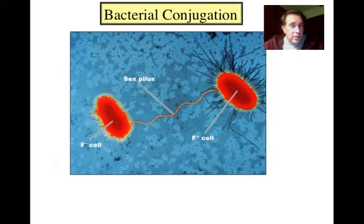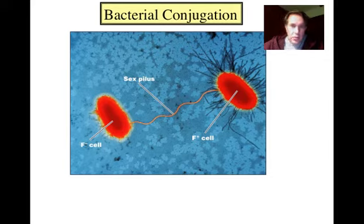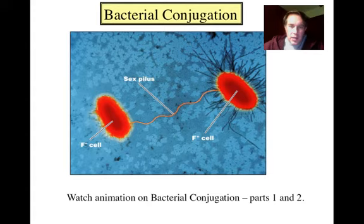The next process is known as bacterial conjugation. It's very different from transformation in that instead of just one recipient cell, you actually have two cells involved. This electron micrograph, colorized, shows an actual conjugation event where one cell — the F-plus cell, the donor — passes DNA through a sex pilus or conjugation tube to a recipient cell. Pause the video now and watch the animation on bacterial conjugation on the portal, parts one and two, then come back.